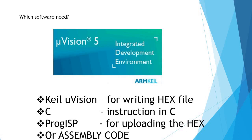Now we have modern tools available, such as Keil µVision IDE software. This is provided by ARM (Advanced RISC Machines) and the software is called Keil µVision. Using this IDE, we can write a C file, convert it to a hex file, and then upload it to the 8051 board.